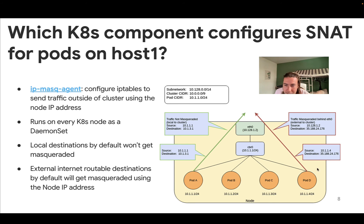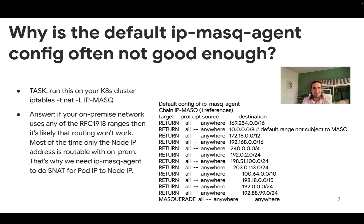On the right side we see a red arrow where pod D is trying to send a packet to 35.188.24.176, an internet-routable IP address. When the pod sends out the packet it uses the pod source IP address, but before it leaves the node it gets translated to 10.128.1.2, which is the IP address of the node itself. To understand why the default ip-masq-agent configuration is often not good enough, let's inspect the default configuration on a GKE cluster. You run the IP tables command and should see output similar to what's shown.